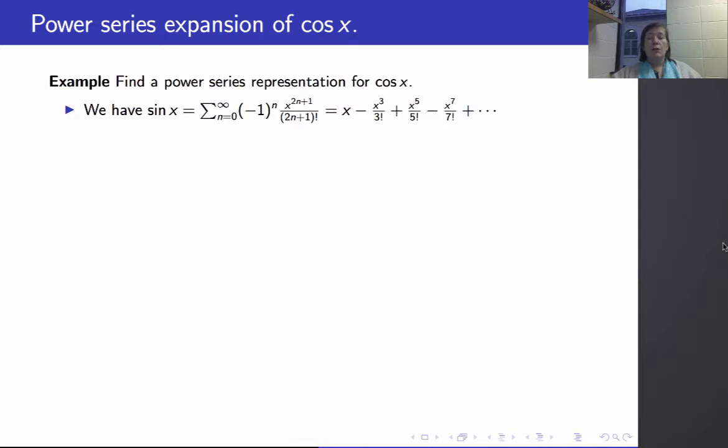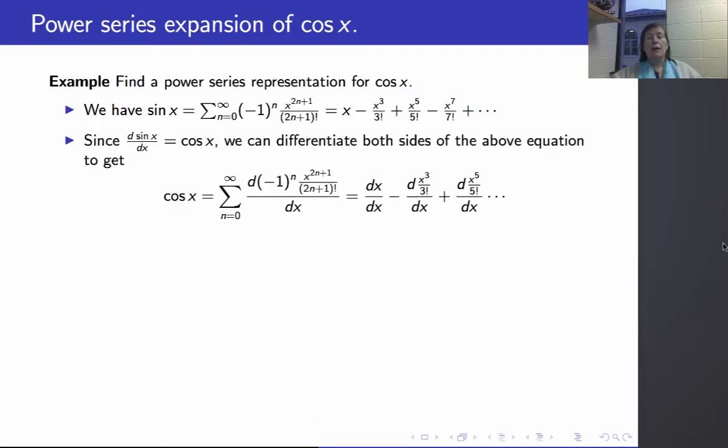Then I know the power series representation for sine of x, it's the sum from 0 to infinity of minus 1 to the n, x to the 2n plus 1 over 2n plus 1 factorial. And, of course, the derivative of sine is cosine, so if I differentiate this equation...